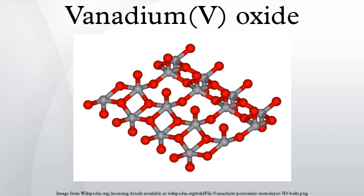Chemical properties: upon heating, it reversibly loses oxygen, successively forming V2O4, V2O3, VO and the metal.